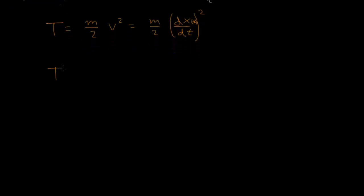So T, after we make our substitution, is going to be m over 2. And I will just show all the steps here. d dt of x bar of t plus this difference function eta. And all of this squared. And we can distribute this derivative, right? It is a linear operator, so we can take these derivatives separately.